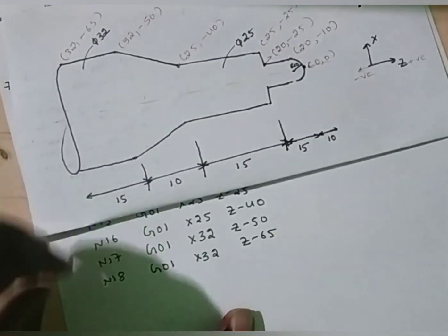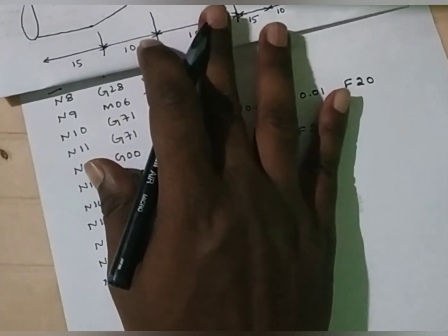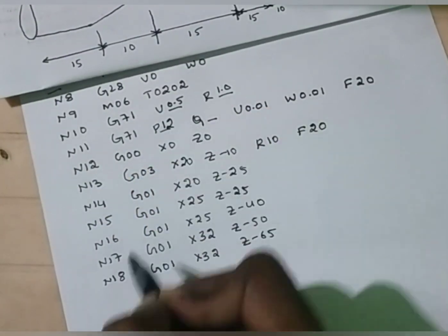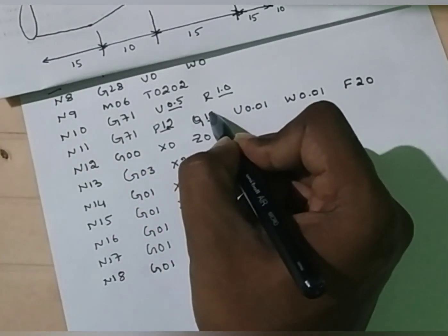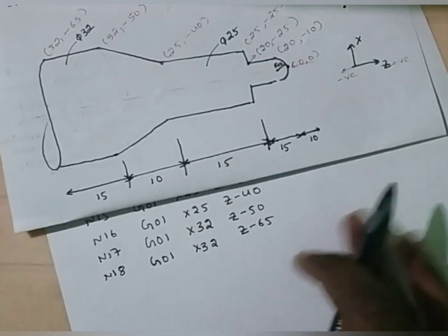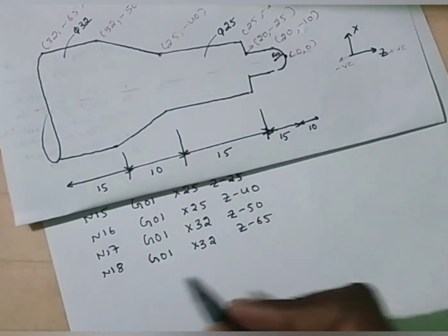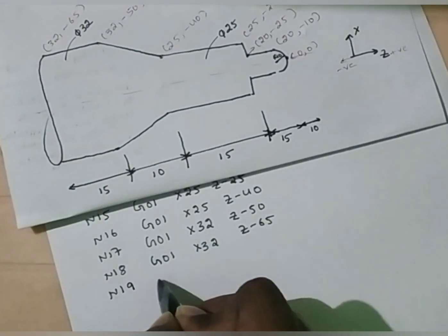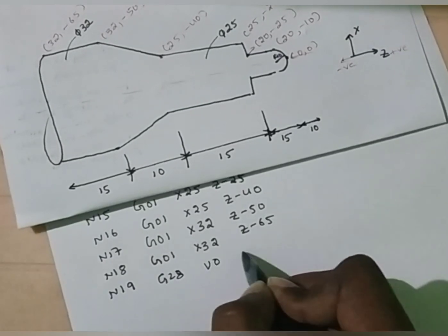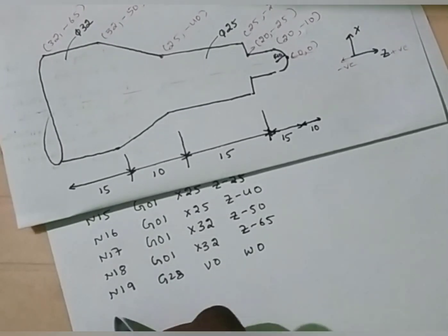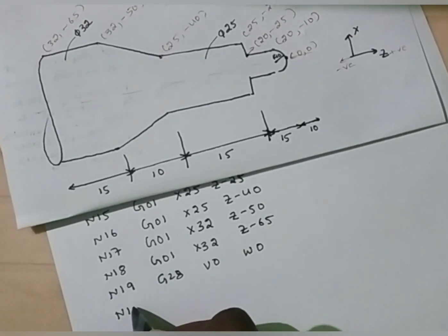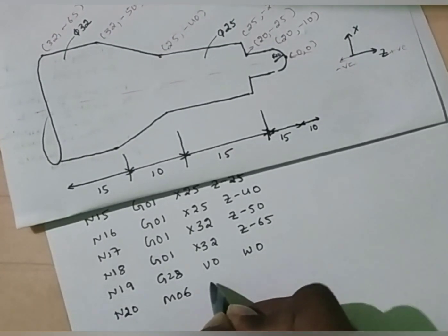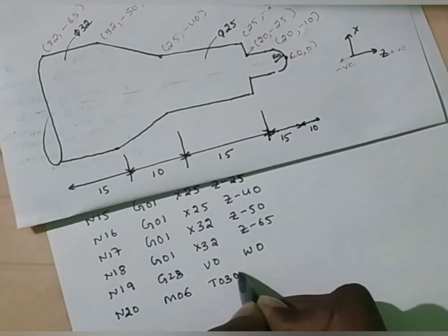Now we have completed the step turning operation. The step turning started at the 12th block and ended at the 18th block. Therefore, Q value is 18 and P value is 12. Now the second operation — step turning — is over. Send this tool to its reference point: G28, U0, W0. Now the third operation is the finishing cycle. Change the tool for finishing cycle: M06, T0303.